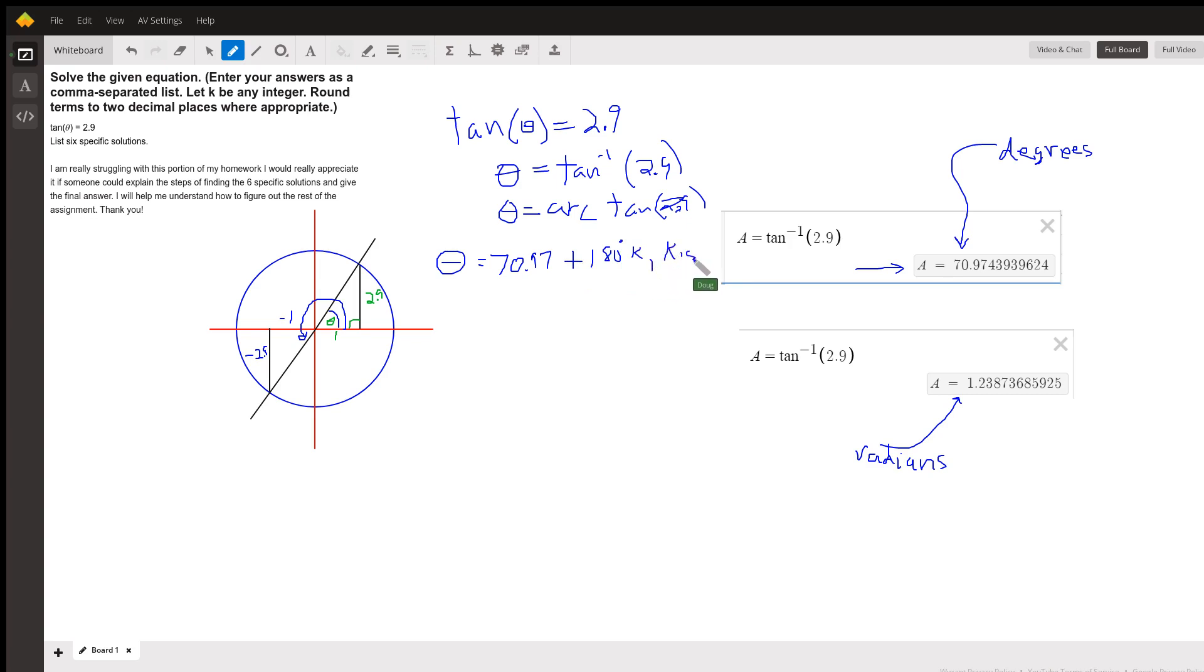If k can be any integer, that means there are infinitely many solutions. As you go around this circle, revolving this initial side,